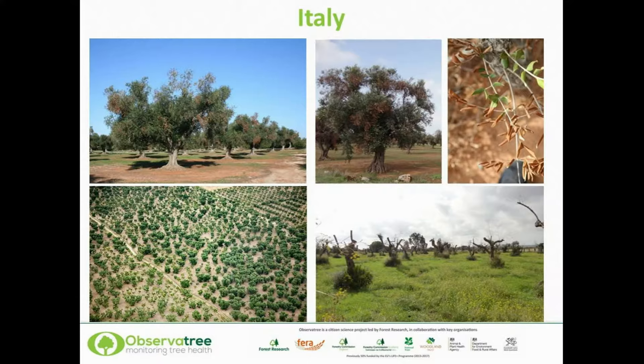We have a series of photographs showing some of the symptoms. If you look to the top left, you'll see a row of olive trees with brown patches of foliage. On the top right, you can see the leaves showing necrosis — half of the leaf is brown and half is green. This is quite characteristic: half of the leaves will die while the rest remain green. The other two pictures at the bottom show the effect and symptoms on olive growth and how the trees died.